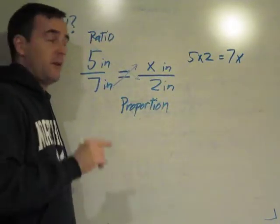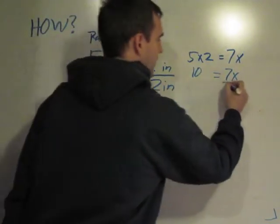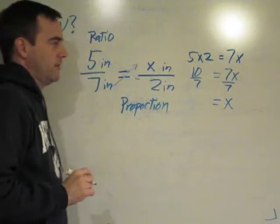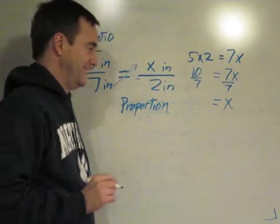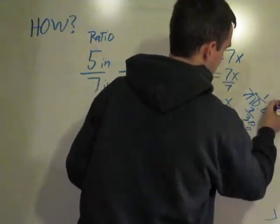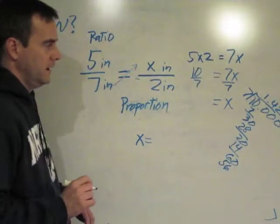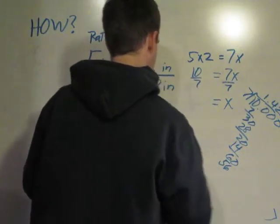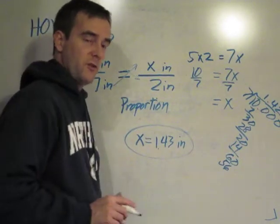And we can solve that. Ten equals seven x. Divide both sides by seven. And we get x equals, rounded, 1.43 inches. So this photo will be two inches wide by 1.43 inches tall.